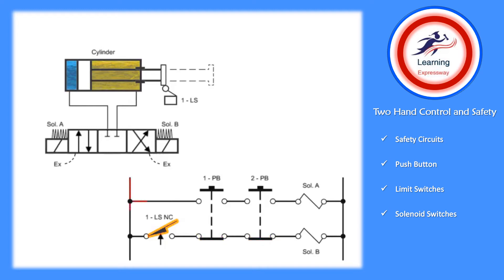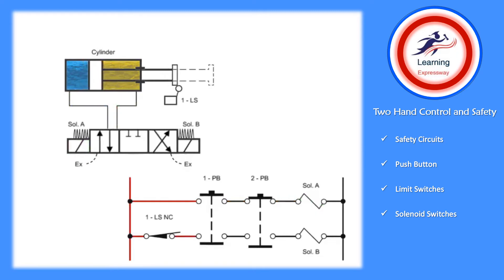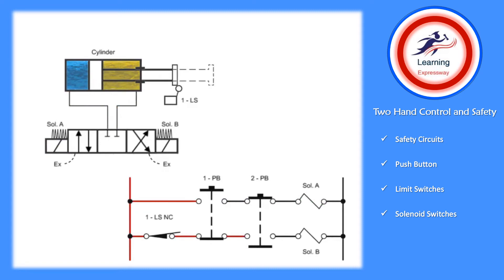Both buttons must be pressed to energize valve solenoid A and start the cylinder forward. When the cylinder begins to move forward, limit switch one is released and goes to its normally closed position. If either button is released, both solenoids de-energize and the springs return the valve to its neutral center position, stopping the movement of the cylinder.